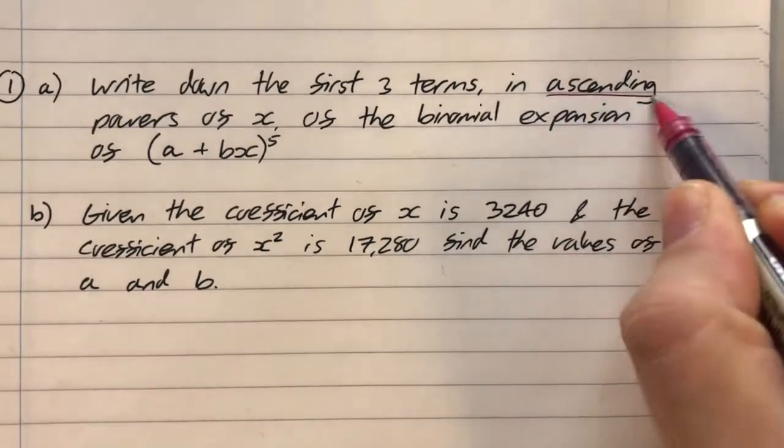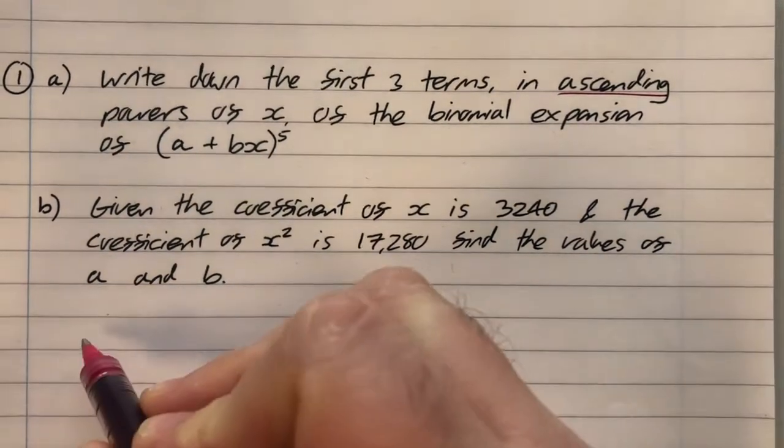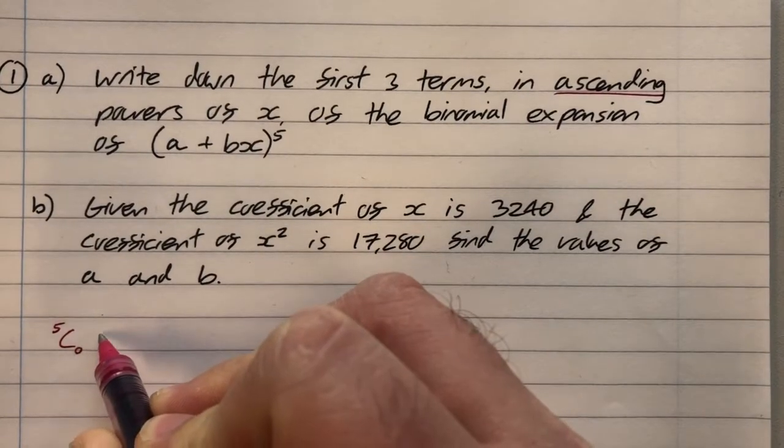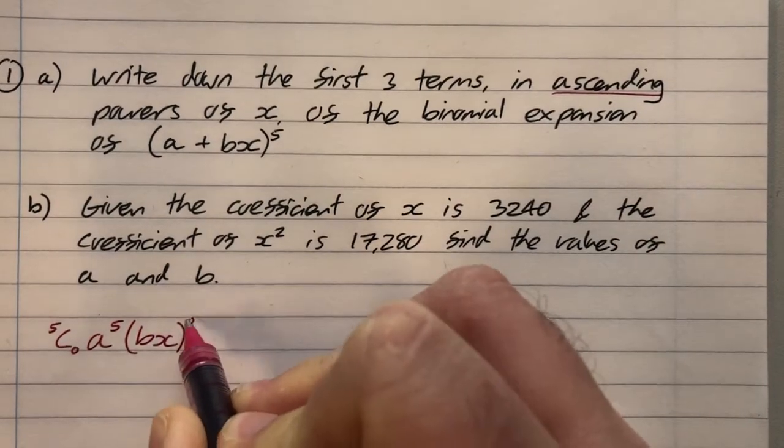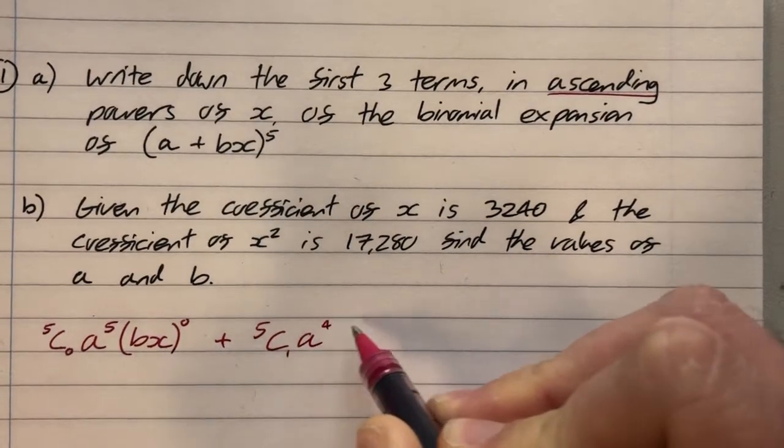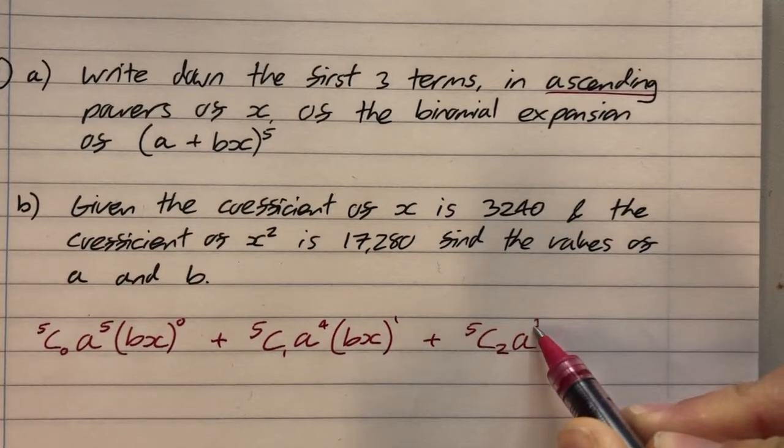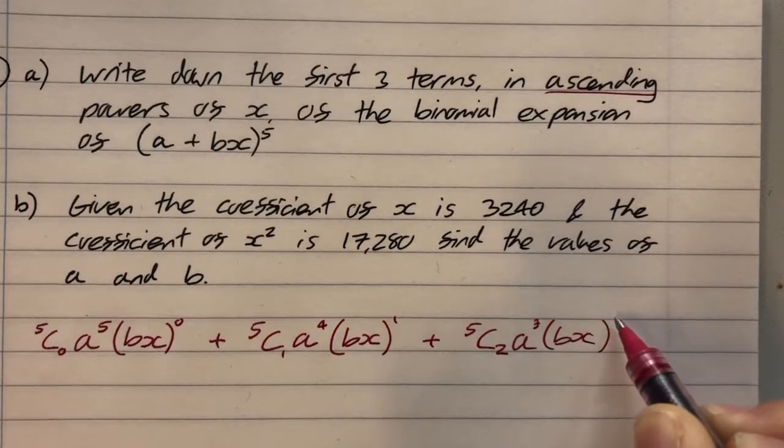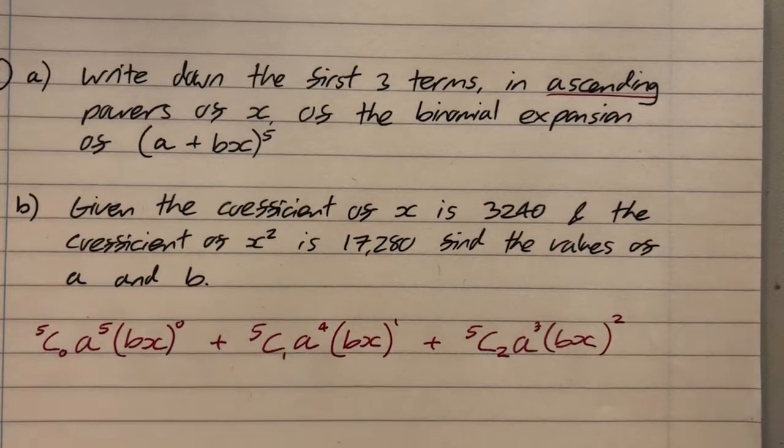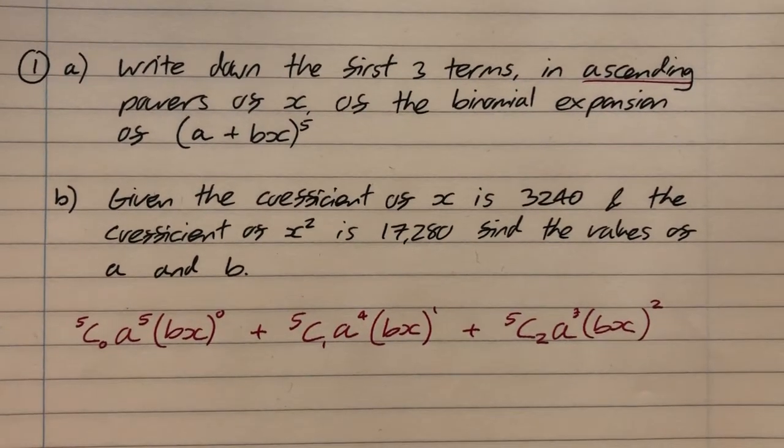Ascending powers of x means we need to increase the powers of x. So we're going to start with x to the zero because we want to increase the powers of x. So I'm going to say that's 5C0 a to the 5 bx to the 0 plus 5C1 a to the 4 bx to the 1 plus 5C2 a cubed bx squared.